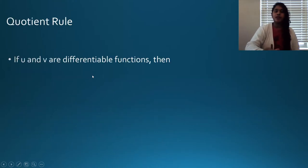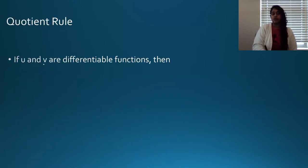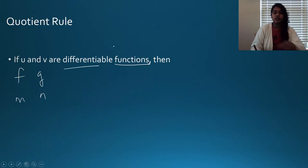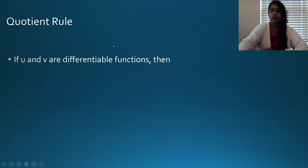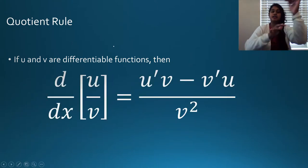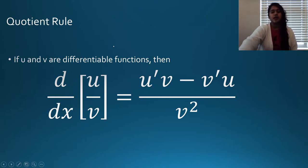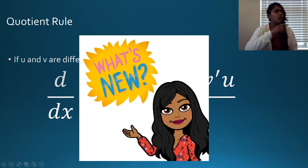To recognize the quotient rule, we have u and v, or f and g, or m and n — basically any different functions that are differentiable. So what does it look like? It looks like u divided by v would become u prime v minus v prime u, all over v squared.